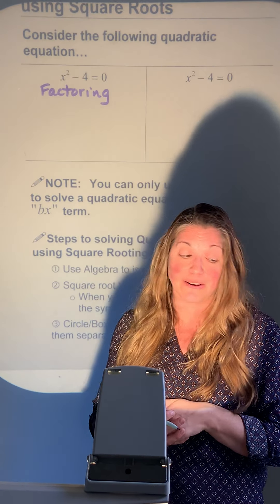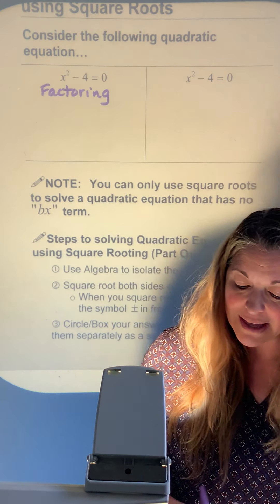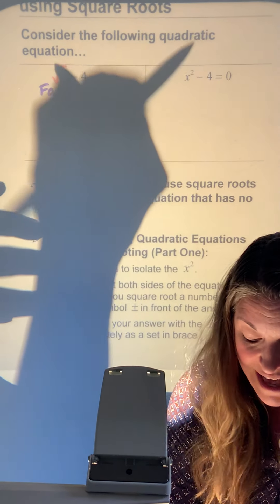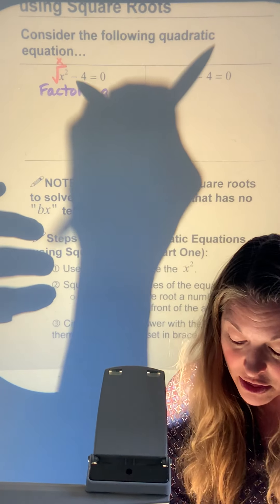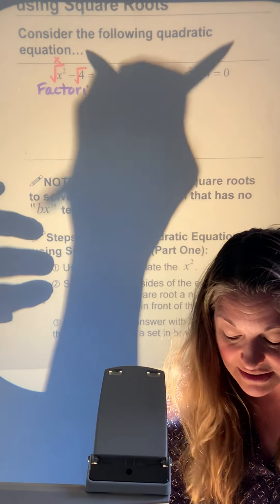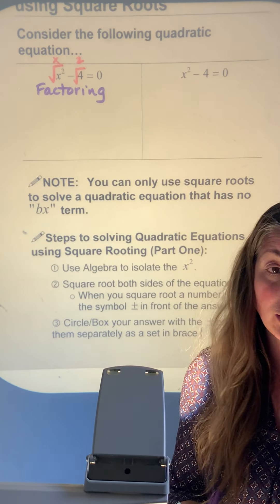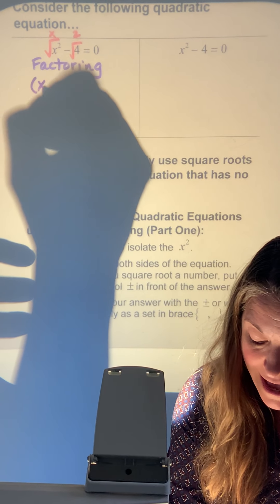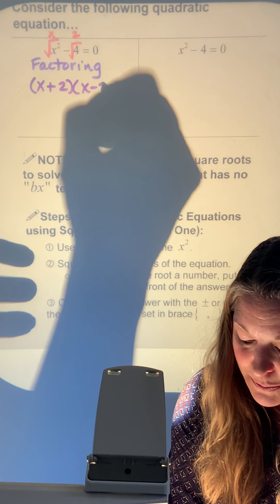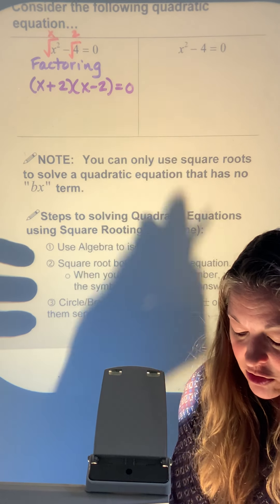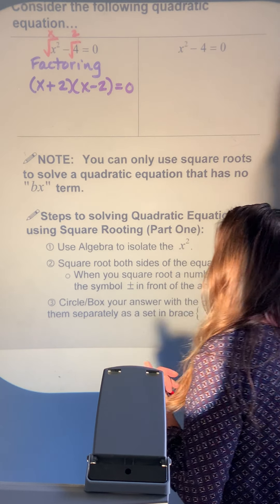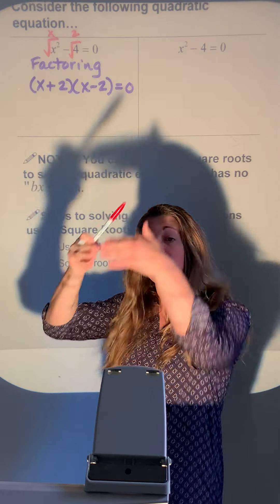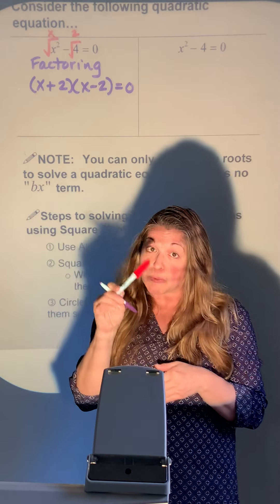Let me check for difference of perfect squares. x squared can be square rooted — that gives x. Four can be square rooted — that gives 2. So factoring x squared minus four gives (x plus 2)(x minus 2). To do this problem with factoring, we first recognize the difference of perfect squares and place them in parentheses.